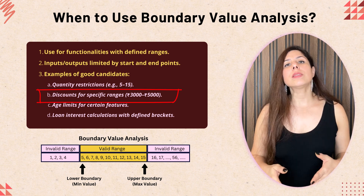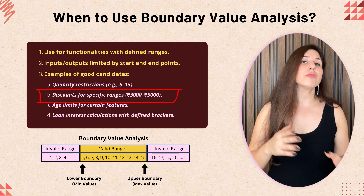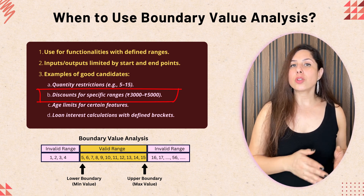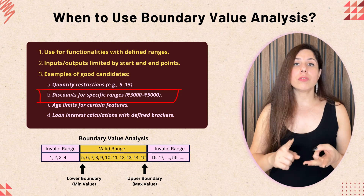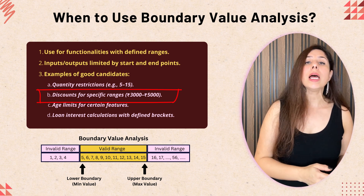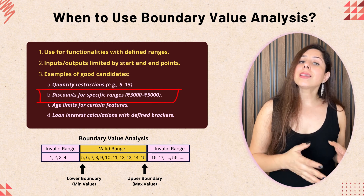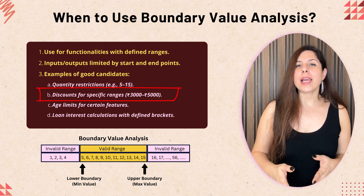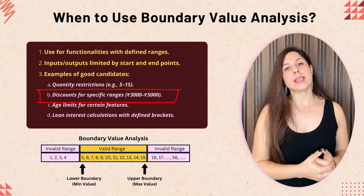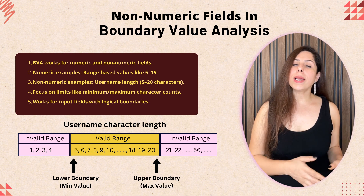In another example, on an e-commerce site a discount might only apply if the total purchase amount is between 3,000 and 5,000 rupees. This means the lower boundary is 3,000 and the upper boundary is 5,000. We should use boundary value analysis to test orders right at 3,000, 5,000, and just above or below these values, to ensure that the discount applies or doesn't as expected. Using this approach, we can easily identify scenarios where boundary value analysis is suitable for designing test cases.